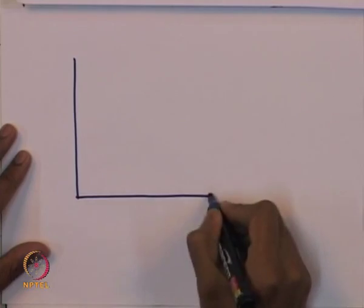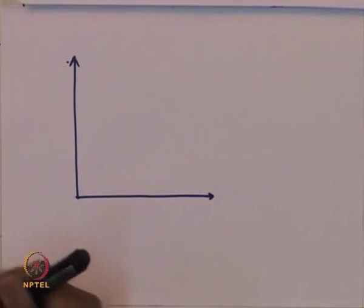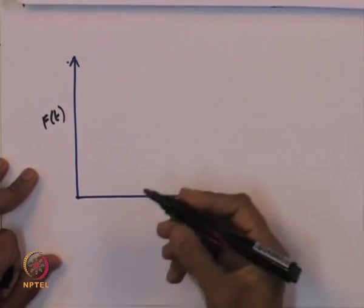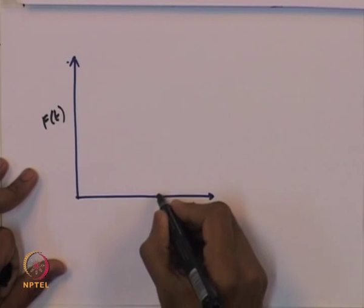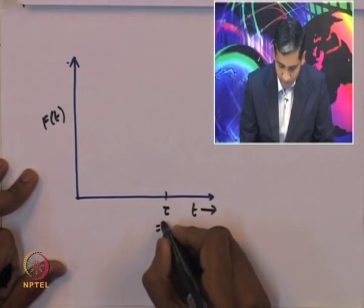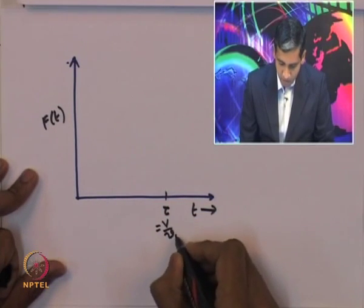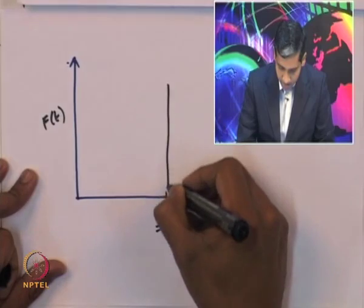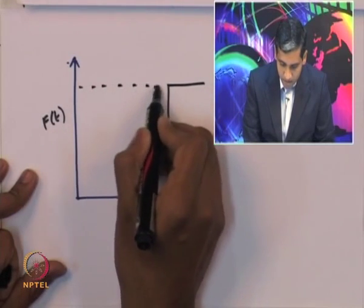Let us now compare the distributions of these three modes of operation for a tubular reactor. Suppose this is the time axis and this is F(t), which is the F curve. If it is a normal operation, then the F curve will start at the space time of the reactor tau, which is essentially given by the volume of the reactor divided by the volumetric flow rate with which the fluid is flowing through the reactor. It looks like a step function going up to one — that is for the perfect operation.